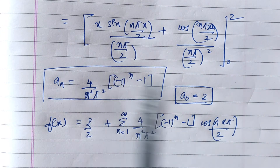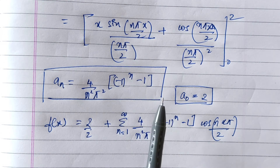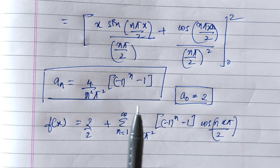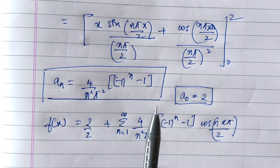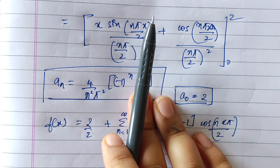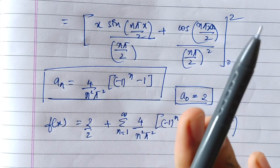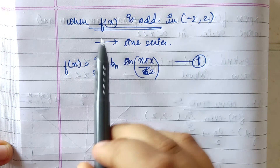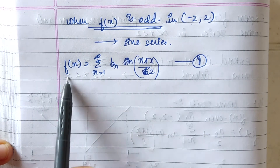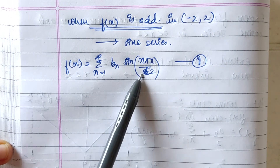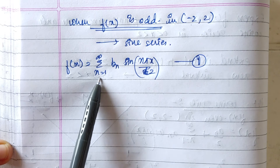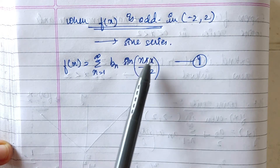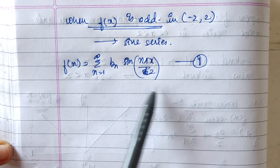This is the answer for the half range cosine series, when the function is an even function in the interval minus 2 to 2. Now we will check the behavior of the function when the function is odd in the interval minus 2 to 2, and we will get a sine series. When the function is odd, our Fourier series will be f(x) equal to summation of n equals 1 to infinity of bn sin(n pi x / 2).